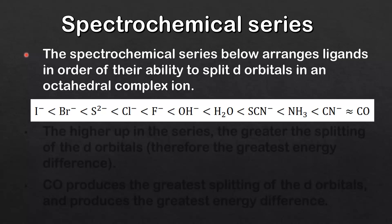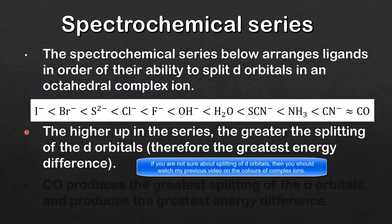Let's start by looking at the spectrochemical series. The spectrochemical series below arranges ligands in order of their ability to split d orbitals in an octahedral complex ion. The higher up in the series, the greater the splitting of the d orbitals, therefore the greater the energy difference between the two sets of d orbitals.